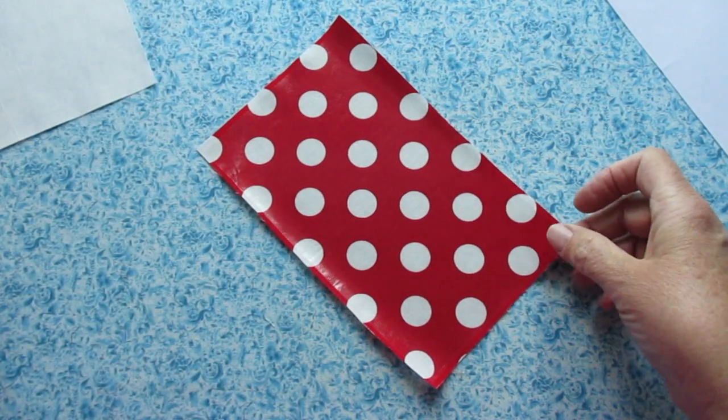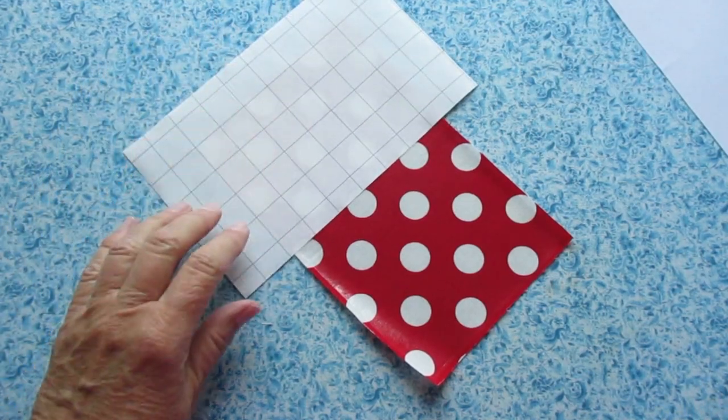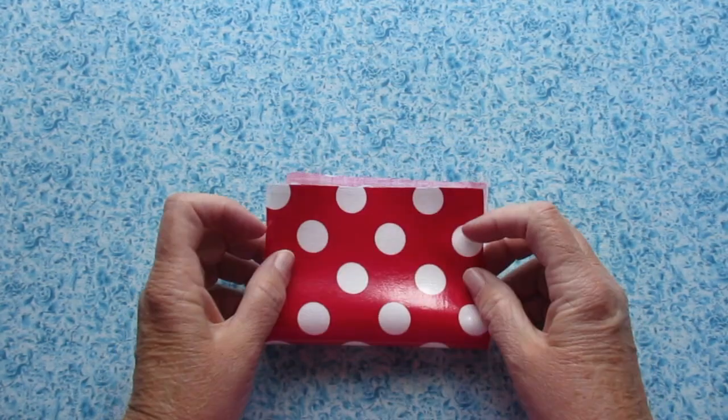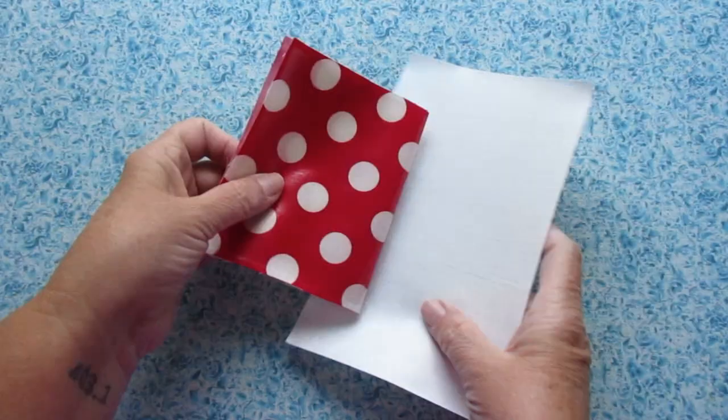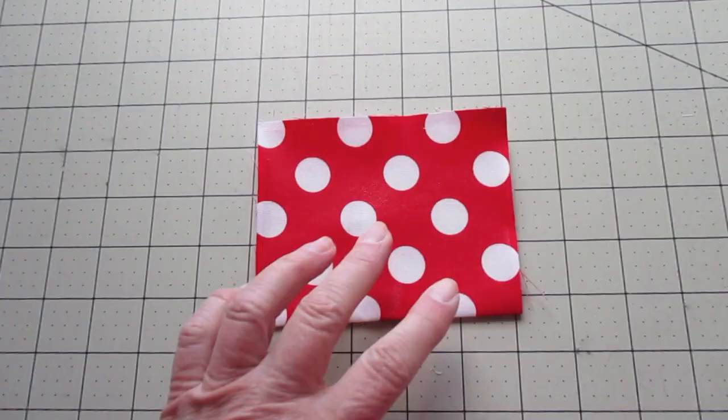If you find any places where the vinyl didn't stick all the way, go ahead and use that piece of paper to iron it on a little bit better. Now fold your piece of fabric in half. Use your fingers to make a crease and then I like to press it, but again put it inside that paper. Let it cool.